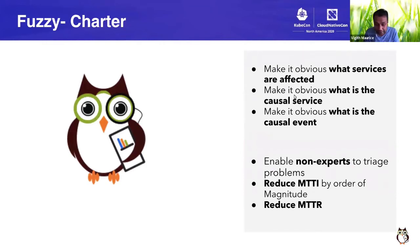What's the charter of Fuzzy? Fuzzy has three main objectives. One is make obvious what services are affected. Second is what is the causal service. And third, the causal event. Once we have this, we believe and we can show that anybody, any non-expert will be able to triage the problem. By non-expert, what we mean is we don't need domain level expert to triage. We should be able to isolate the problem very quickly. We will talk about how ML is helping us in that. And once we are able to reduce the mean time to isolate, we will reduce the mean time to resolve.